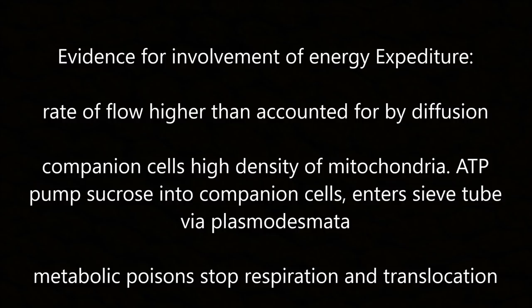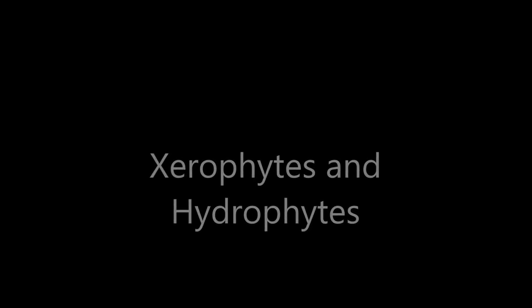Evidence for energy expenditure in translocation: the rate of flow is higher than accounted for by diffusion alone. Companion cells have a high density of mitochondria; ATP pumps sucrose into companion cells and it enters sieve tubes via plasmodesmata. Metabolic poisons stop respiration and translocation.